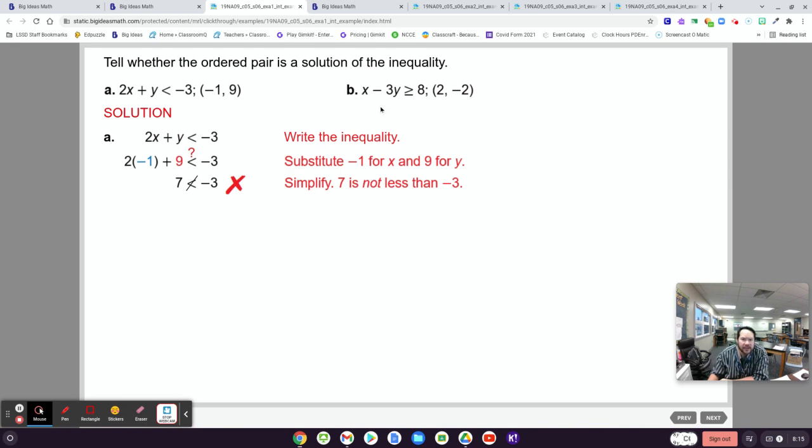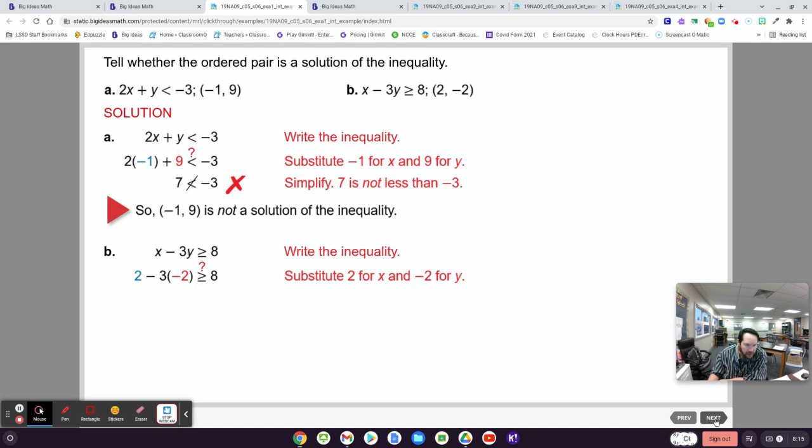Okay, for b, take a look at that one and decide if 2, negative 2 is a solution to that linear inequality. Let's see. When you plug them in, you get 8 is greater than or equal to 8. That is true because 8 does equal 8. So this point right here, 2, negative 2 is a solution to the inequality. If it were just a greater than sign, then it wouldn't have been. But because it can equal, then yes, that works.